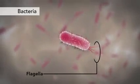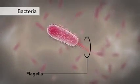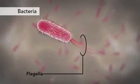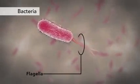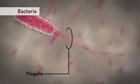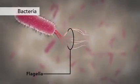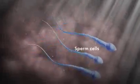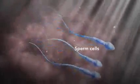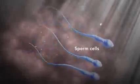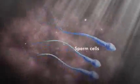Another unique feature in some cells is flagella. Some bacteria have flagella. A flagellum is like a little tail that can help a cell move or propel itself. The only human cell that has a flagellum is a sperm cell.